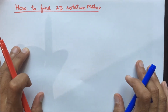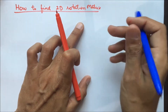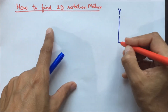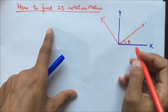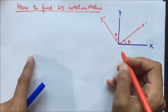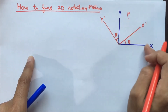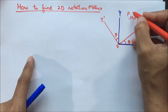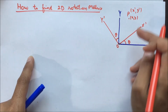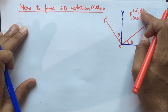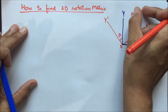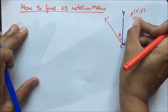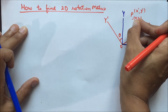In this video I will discuss how to find the 2D rotation matrix. If we have a coordinate system x-y and it is rotated with an angle theta in the anti-clockwise direction to x'-y', then this angle is theta. The coordinates x' and y' are connected with x and y through a 2D rotation matrix.